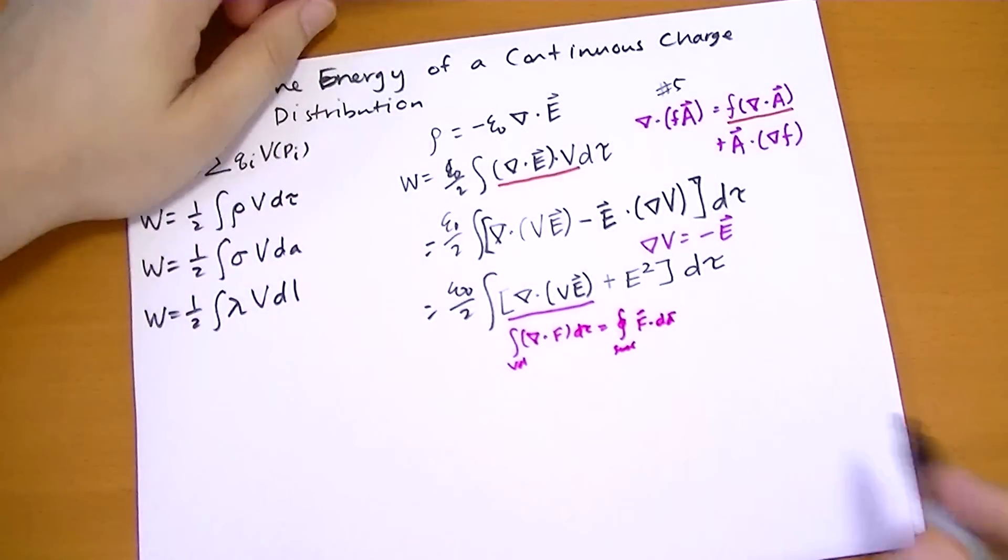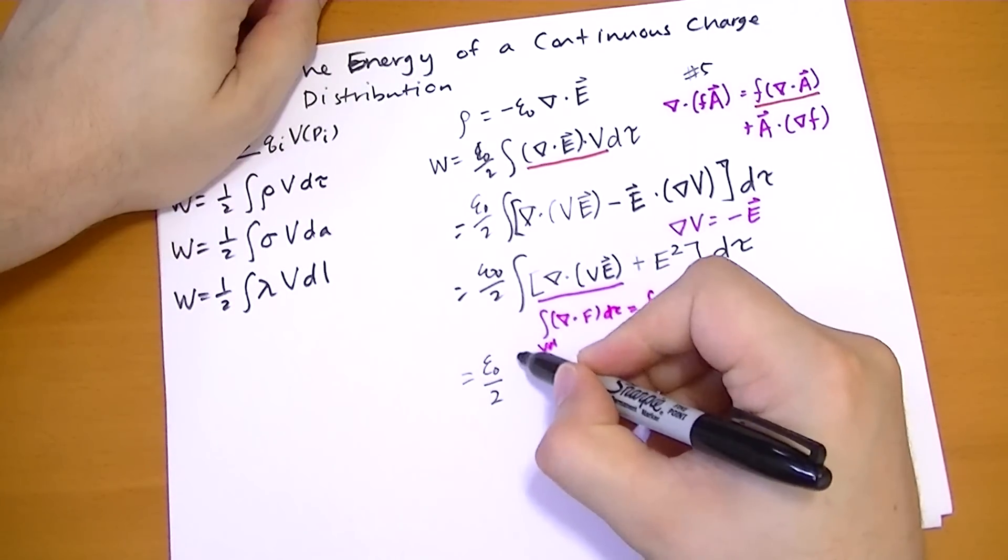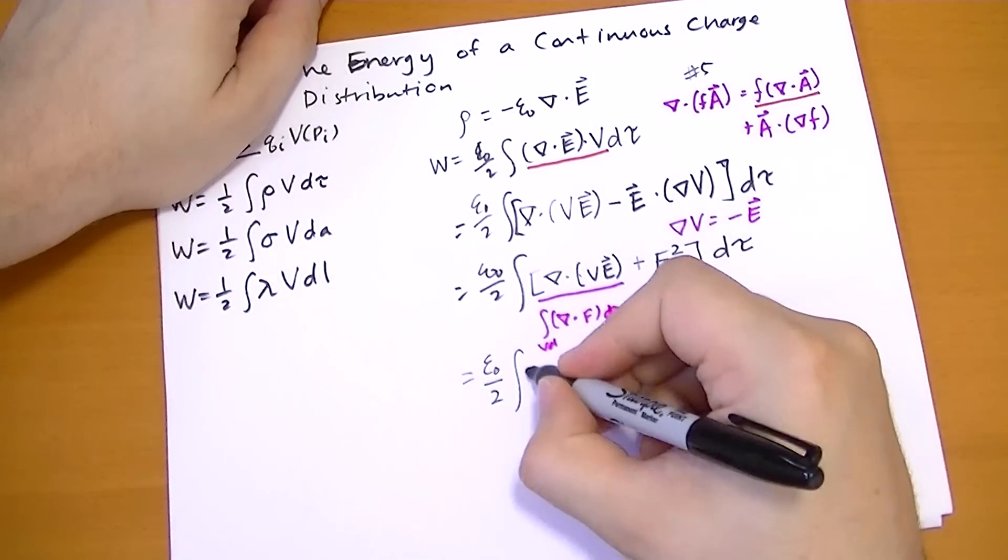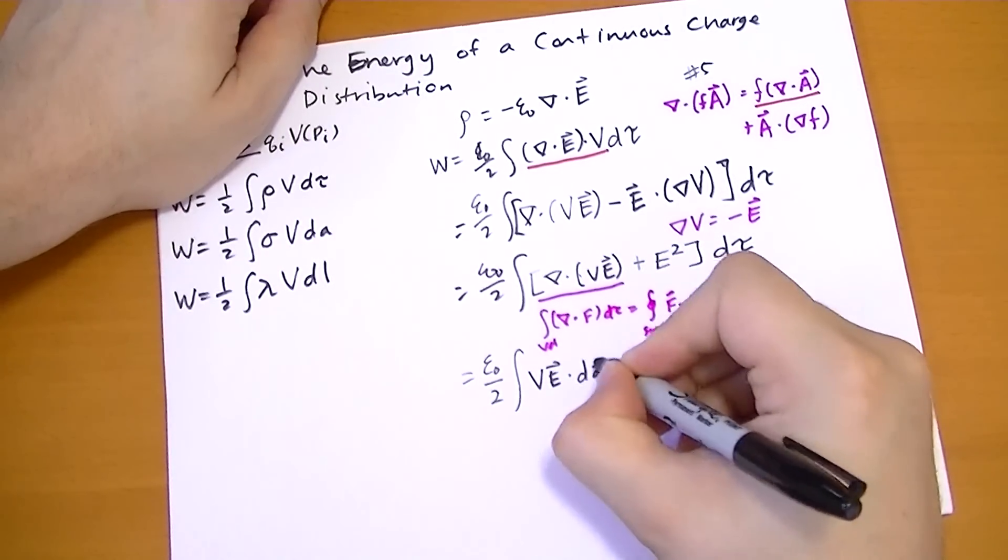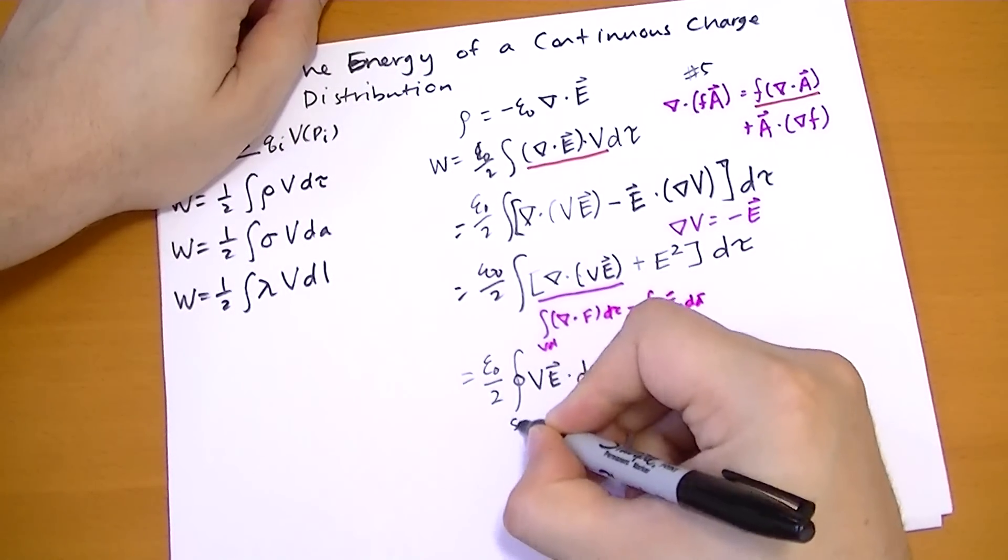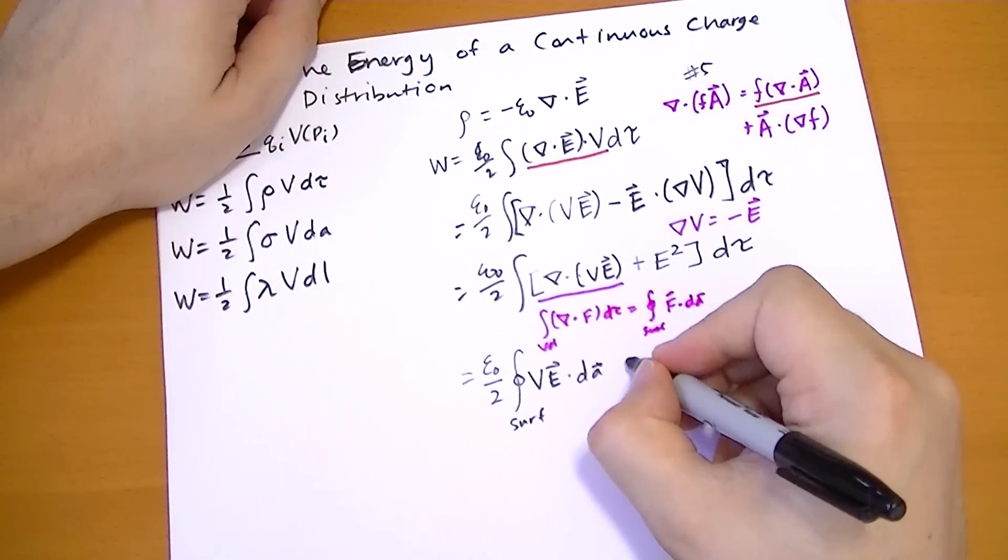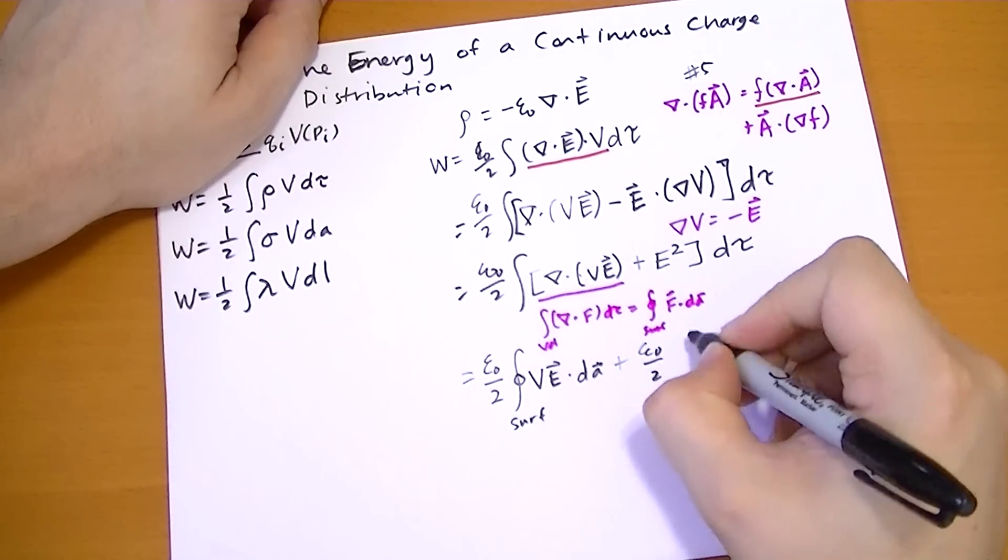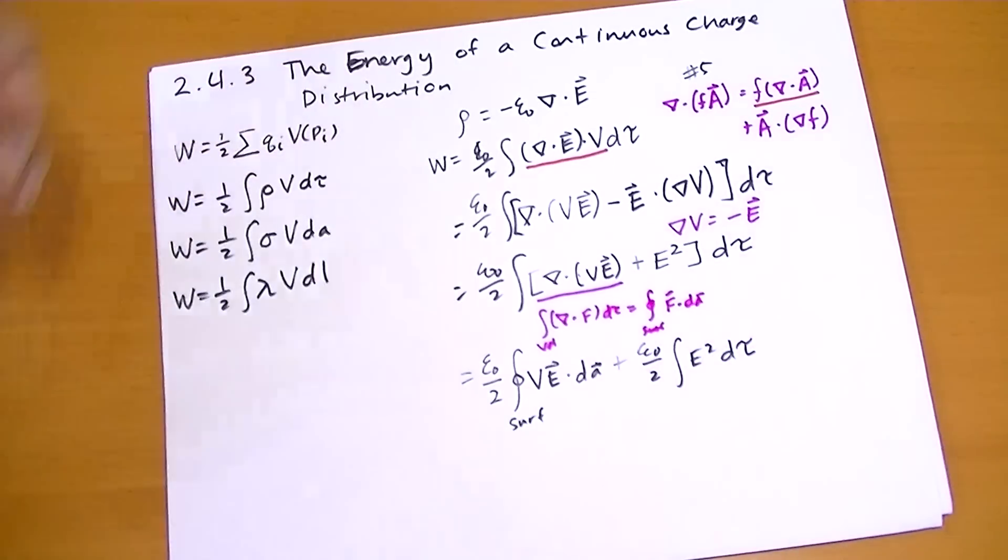So we rewrite that that way. So this is equal to epsilon naught over 2, the integral of vE dot dA, this is the surface of this volume that we're doing, plus epsilon naught over two times the integral of E squared d tau. Bear with me, we're almost done.